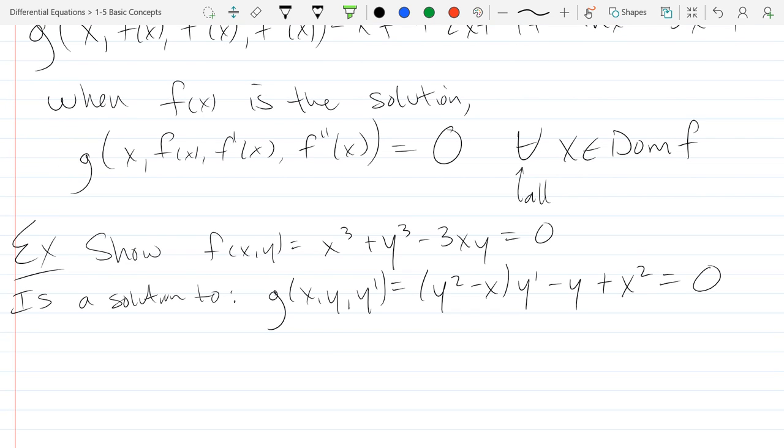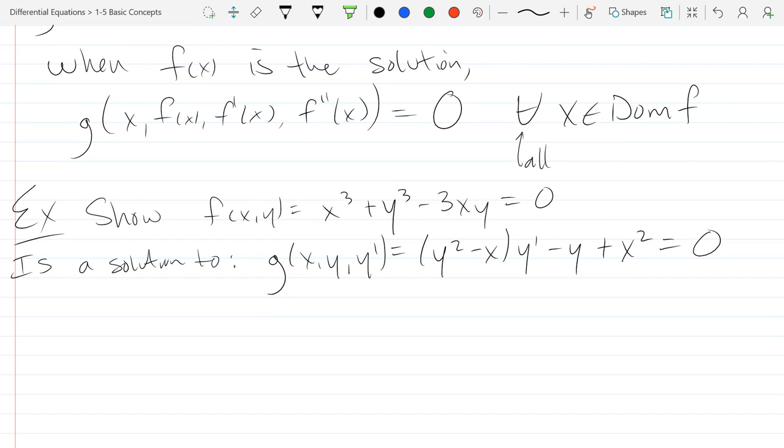So we're going to show this implicit function is a solution to this other implicit function. So we're going to do this very carefully. There's a few ways to do it. When in doubt, what's a good thing to do to begin? Take derivative? Oh, very good. Take derivative. Of what with respect to which variable? We have two equations.